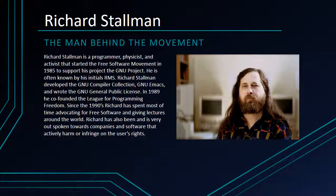So who is Richard Stallman, the man behind the movement? Richard Stallman is a programmer, physicist, and activist that started the free software movement in 1985 to support his other project, the GNU project. He is often known by his initials, RMS. Richard Stallman developed the GNU Compiler Collection, GNU Emacs, and wrote the GNU Public License. In 1989, he co-founded the League of Programming Freedom. Since the 1990s, Richard has spent most of his time advocating for free software and giving lectures around the world. Richard has also been very outspoken towards companies and software that actively harm or infringe on the user's rights and freedoms.